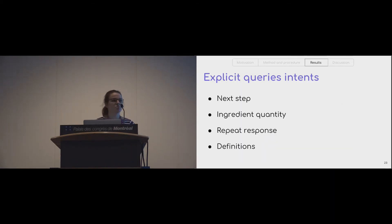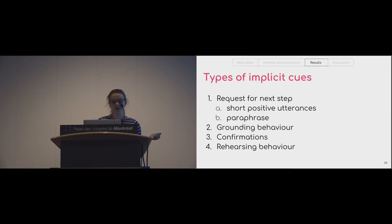Let's dive deeper into each category. With explicit queries, we saw everything that you would expect to see while cooking a recipe. It was asking for a next step, asking for ingredient and quantity, asking to repeat a previous response, and asking for definitions of some words that occurred in the recipe. Let's take a closer look at the types of implicit cues that we have observed and what behavior they signaled.